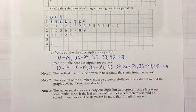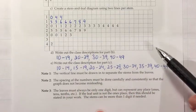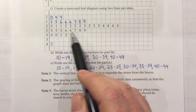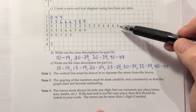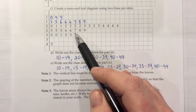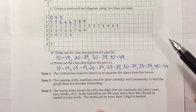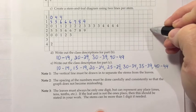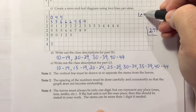And then finally note three, the leaves must always be only one digit, but they can represent any place ones, tens, tenths, et cetera. If the leaf unit is not the ones place, then this should be stated in your work and the stems can be more than one digit if needed. So let me just kind of discuss a few hypotheticals with this one. So if you look at a stem and leaf and there's no notation about it, you should assume this is tens and this is ones and therefore a number like this seven on the two line would be 27. But if there was a note that said the leaf unit represents the tenths place, then I would think, alright, if this is the tenths place, then that's a .7 and then this must be one place to the left, which would be the ones place, and then this would be a 2.7. So we might do that if these were grade points or something.